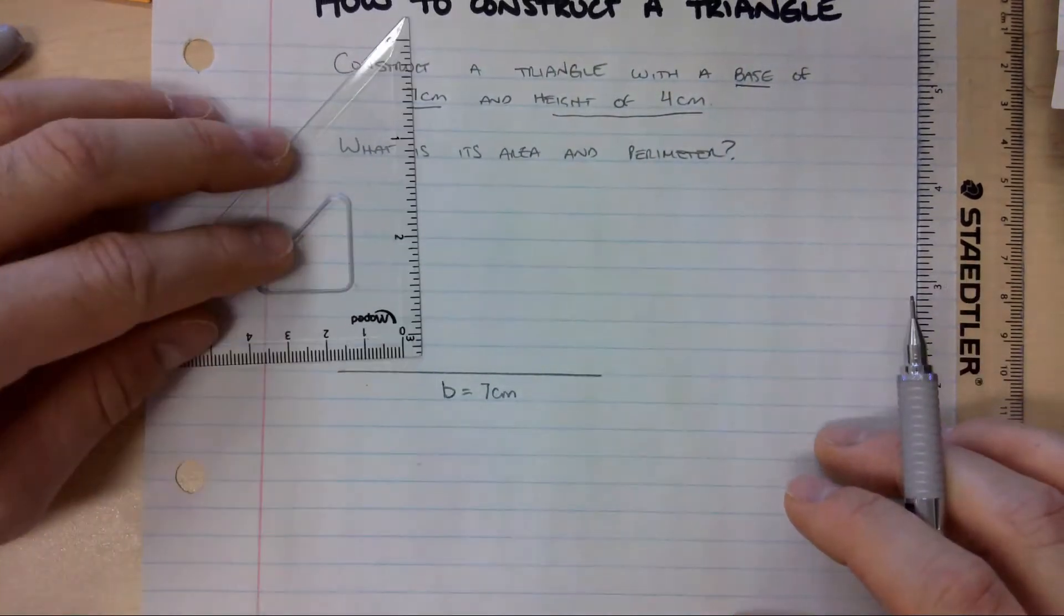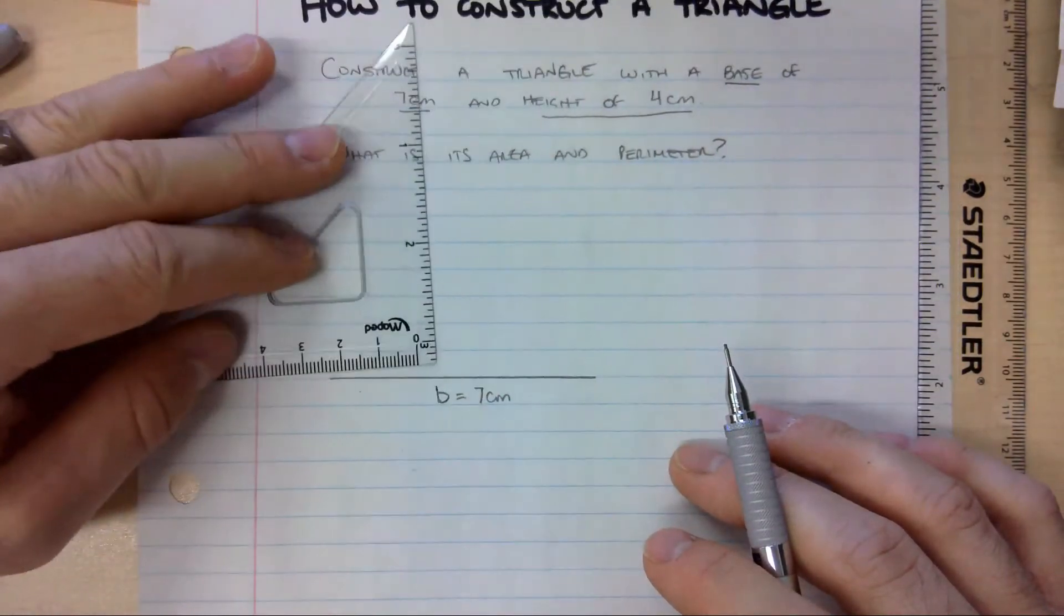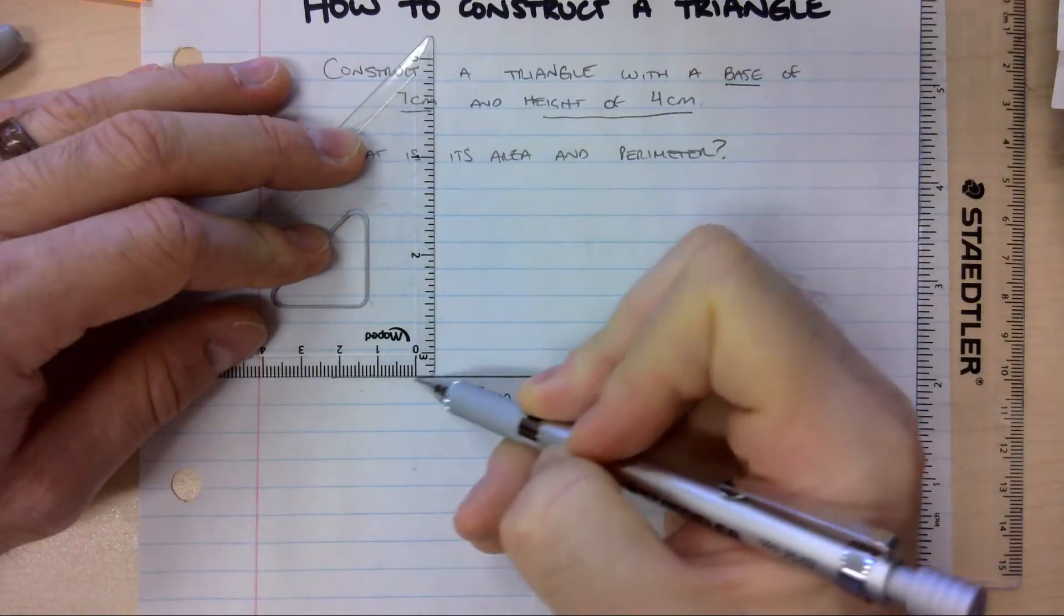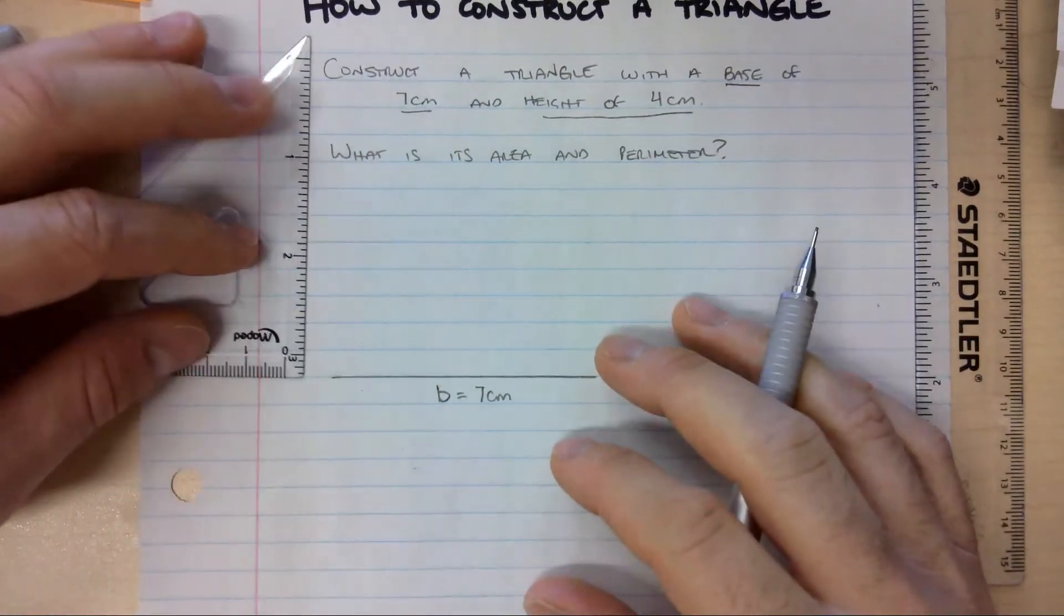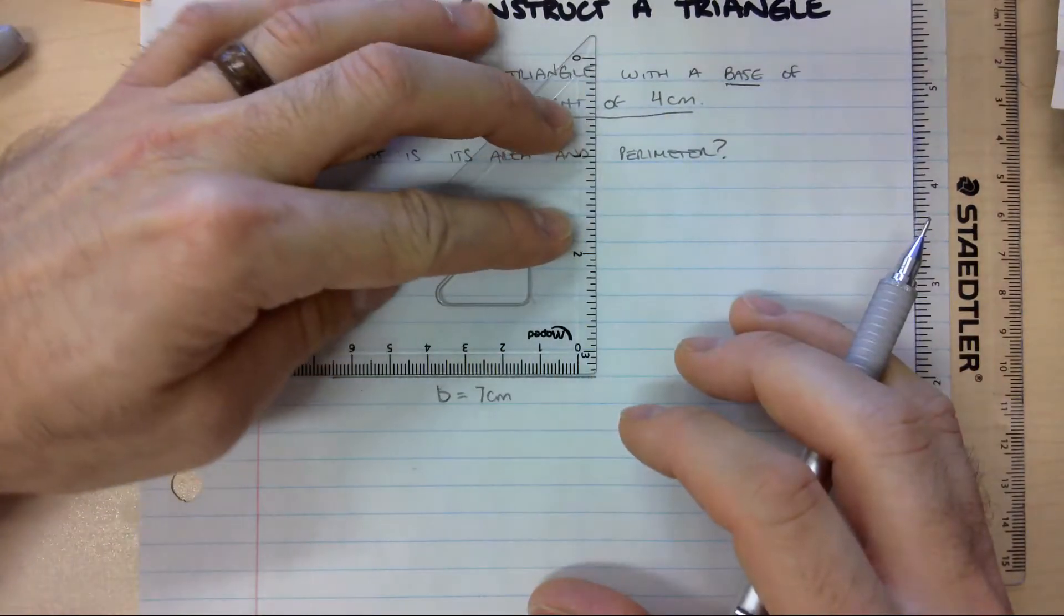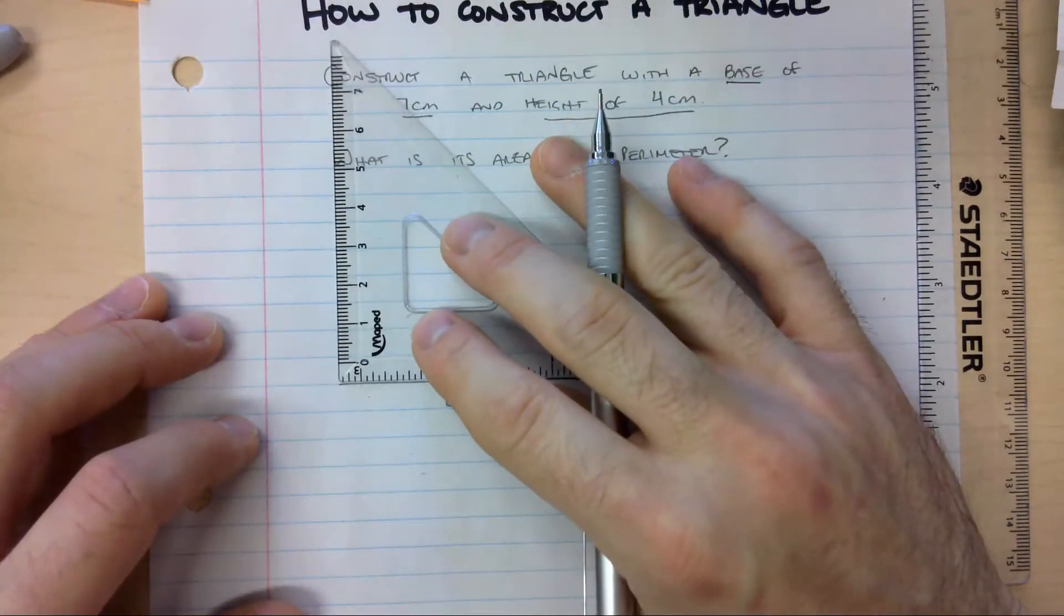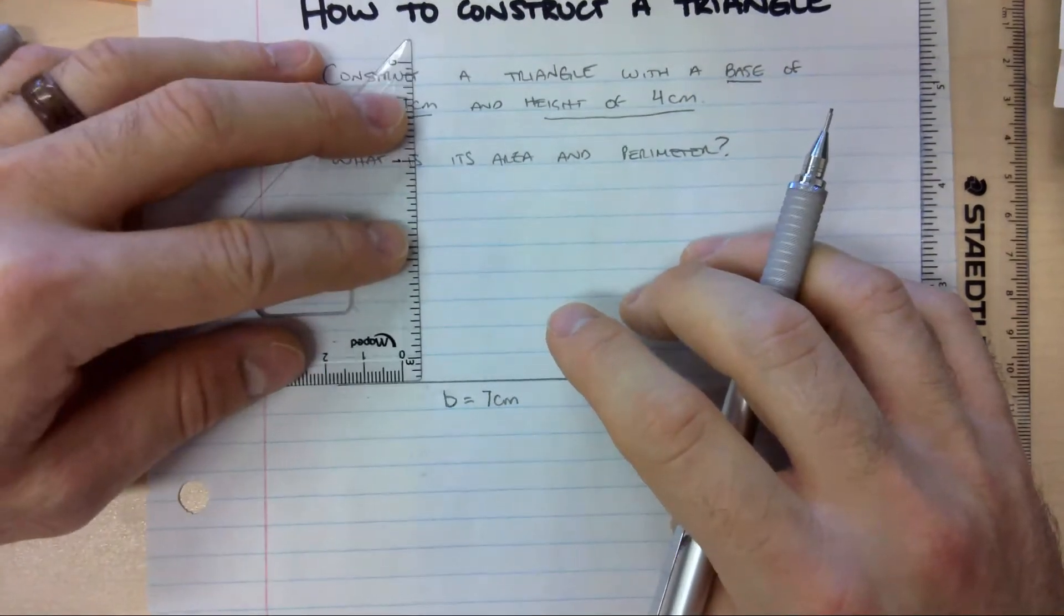All I have to do now is take my set square and just put it anywhere on this line so that I have a corner or a perfect 90 degree angle going upwards, right? I can do that on the extreme edge here. I can do the same thing on the other edge here. That's going to give me a very specific type of triangle. But I like to just go somewhere in the middle.